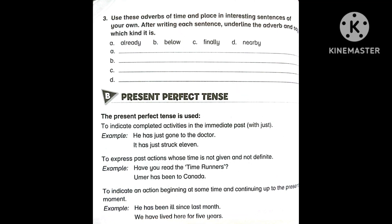The next section is Section B: Present Perfect Tense. The present perfect tense is used, firstly, to indicate completed activities in the immediate past — using the word 'just' — meaning the work is now completely done, just recently in the past. Examples: 'He has just gone to the doctor.' 'It has just struck eleven.'